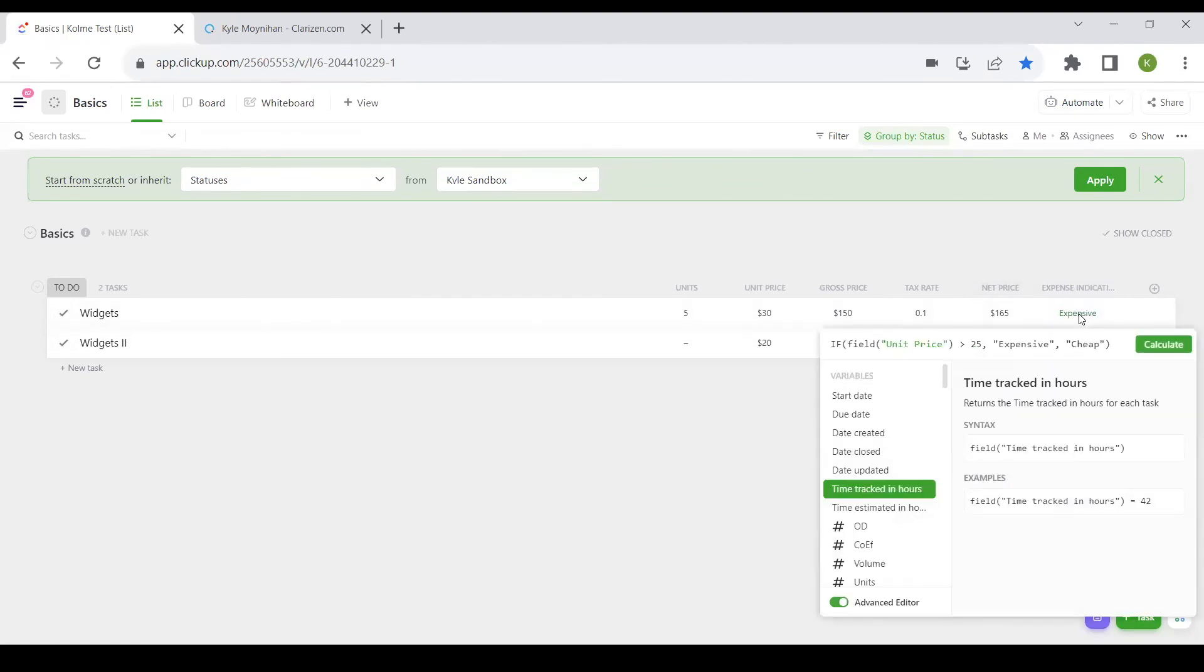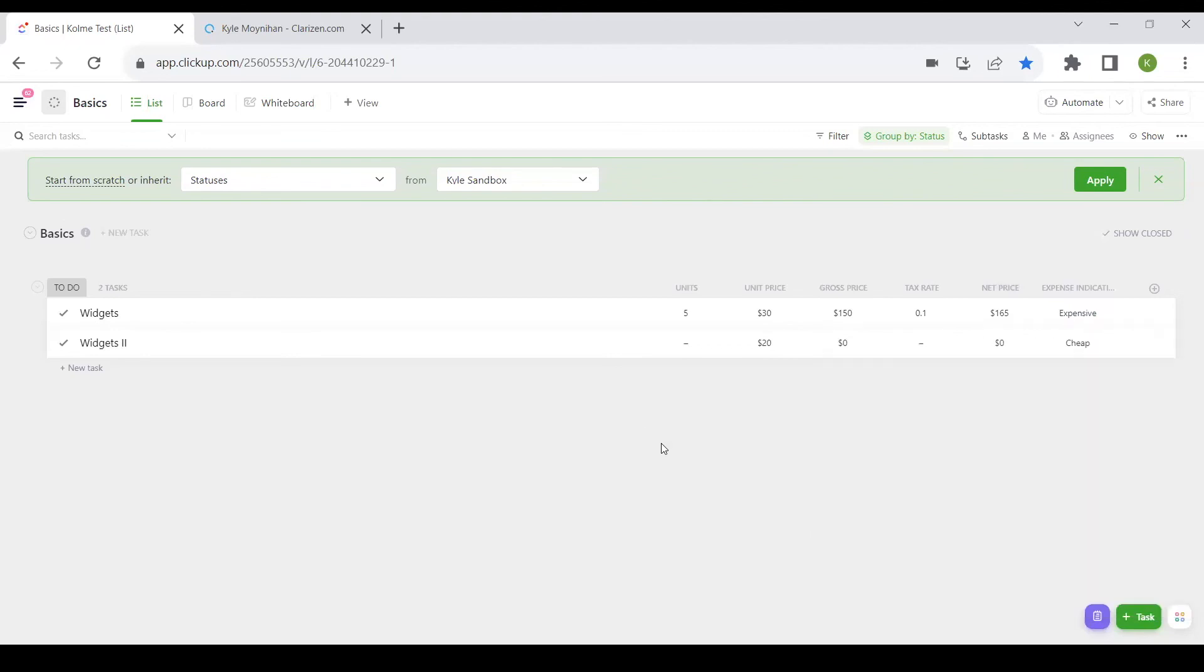If we click into our advanced formula editor and look at the basic if statement, we just say if the unit price is greater than $25, then show it as expensive. Otherwise, show it as cheap. And there you go. Very simply, you can see how your advanced formula editor can be used to do things beyond mathematics.